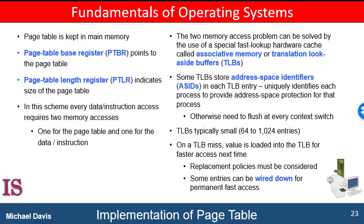The standard solution to this problem is to use a special, small, fast lookup hardware cache called a translation look-aside buffer, or TLB. The TLB is associative high-speed memory. Each entry in the TLB consists of two parts: a key and a value. When the associative memory is presented with an item, the item is compared with all keys simultaneously. If the item is found, the corresponding value field is returned. The search is fast — a TLB look-up in modern hardware is part of the instruction pipeline.